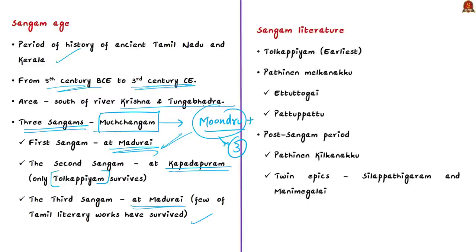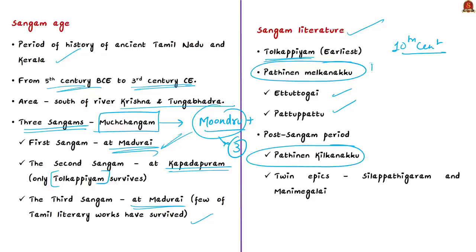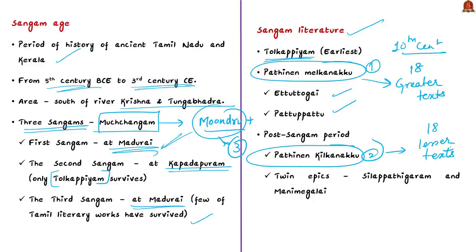The literary products of the Sangam Age are a window into ancient Tamil society. The Sangam literature chiefly consists of Tolkappiyam, Ettutogai, and Pattuppattu. The literature was compiled in the 10th century into two categories: Padinen Meelkanakku (18 greater text series, comprising Ettutogai and Pattuppattu) and Padinen Keelkanakku (18 lesser text series). Tolkappiyam is also part of Sangam literature and the earliest. Two post-Sangam epics — Silappadikaram and Manimekalai — also help us know the society, economy, and culture of ancient Tamils.